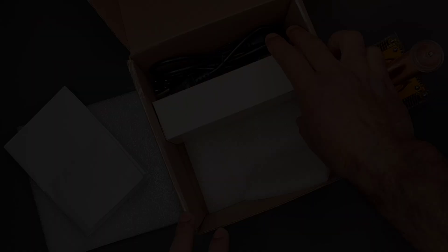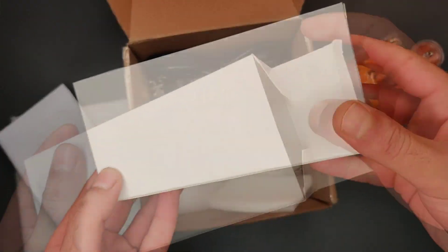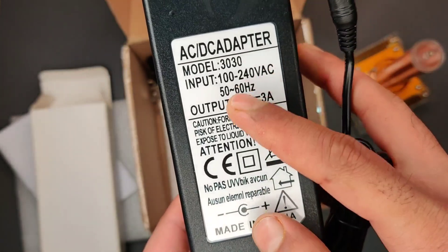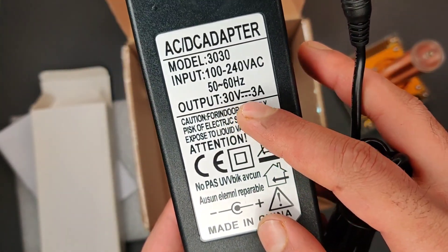Also we get another white box which actually contains power supply adapter. As you can see, this Tesla coil uses 30 volts 3 ampere power supply.